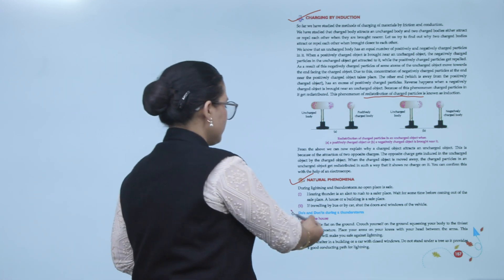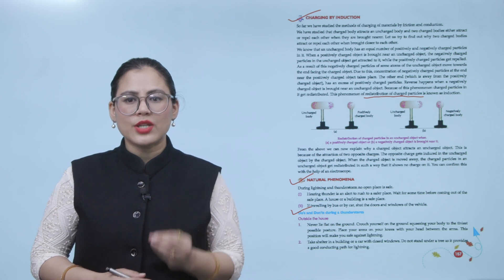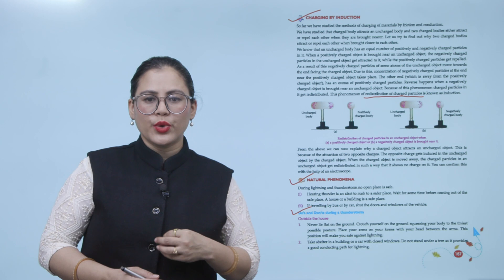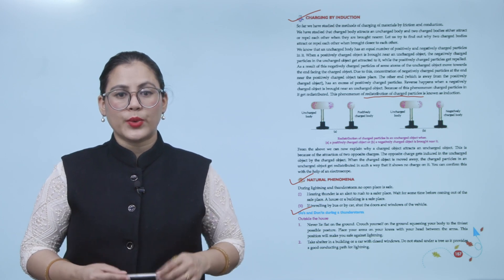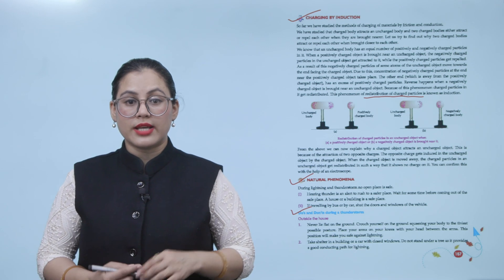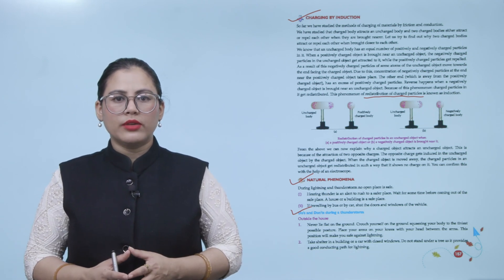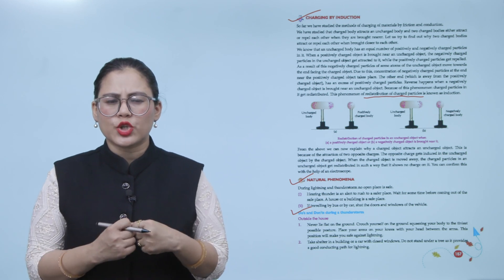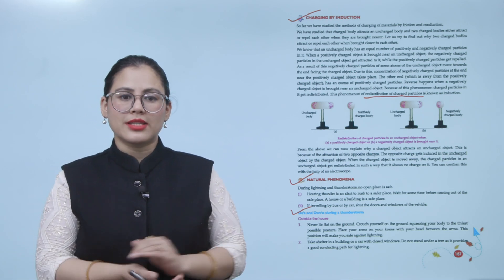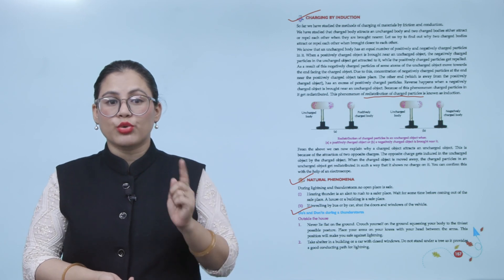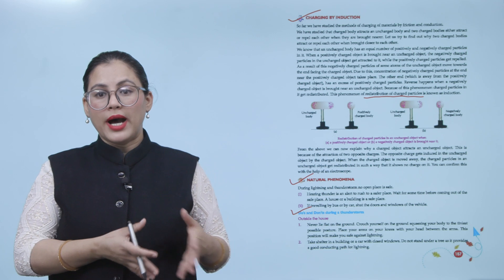Outside the house during a thunderstorm: number one, never lie flat on the ground. Crouch yourself on the ground, squeezing your body to the tiniest possible posture. Place your arms on your knees with your head between your arms — this position will make you safe against lightning. Number two, take shelter in a building or a car with closed windows. Do not stand under a tree, as it provides a good conducting path for lightning. Agar aap bahar hain, toh zameen pe flat na leten — apne aap ko crouch kar len, body ko squeeze kar len. Apne arms ko knees pe rakhen, head ko arms ke beech mein rakhen. Aur ped ke niche bilkul bhi na khadein.